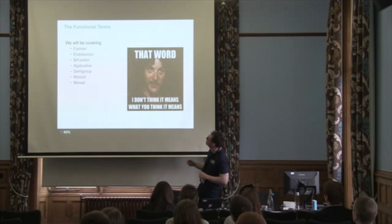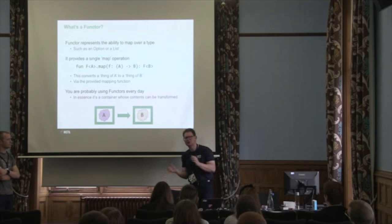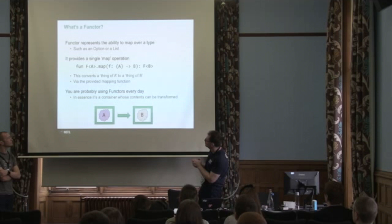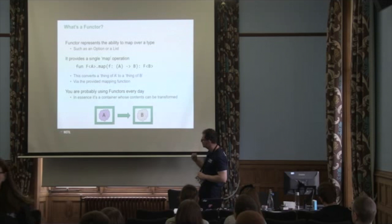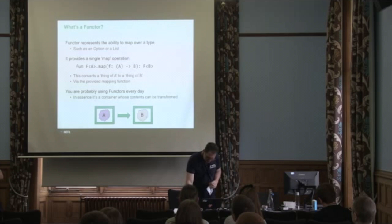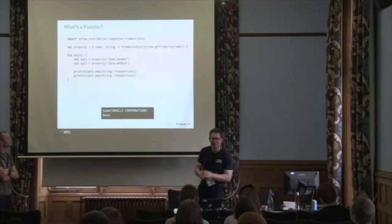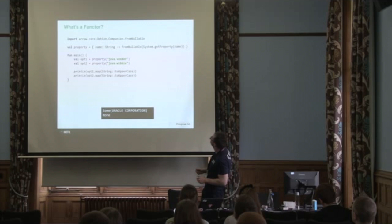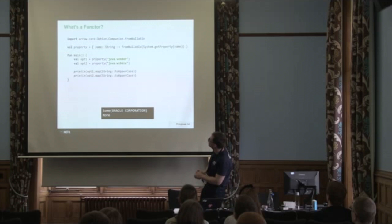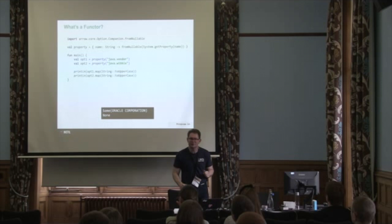These are some of the scary-sounding terms from the bounded context of functional programming, but they're not really that scary — we're going to go through them at light speed. You have functors. A functor is just any container which is mappable. You have a value that lives in the box, and you want to be able to transform the value while staying in the same box. So you have a functor and you can map it. We've got this function as a value called 'property' that will call system.getProperty and wrap the result in Option. java.vendor will give a Some; java.wibble will give a None. Either way we get back a box — an Option which is either a Some or a None — and we can map over it. You now know what a functor is. You can also have an endofunctor: if you're doing a mapping but just changing the value without changing the type, then it's an endofunctor.